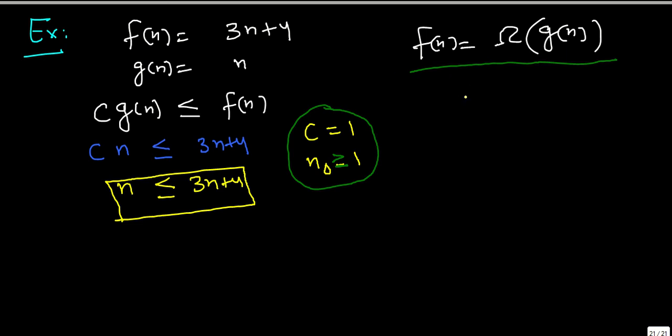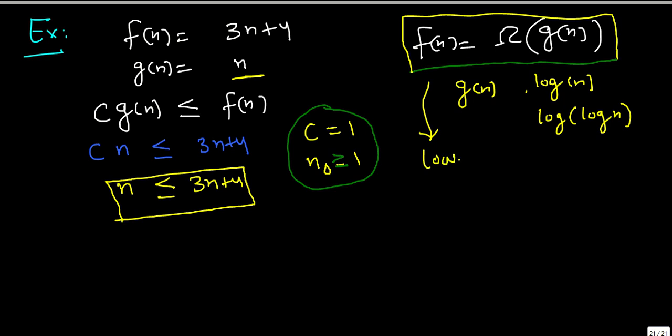Technically speaking, if you have any function G(n) like log of n or log of log n, and if these functions are smaller than this G(n), we can say that this condition is being satisfied. Technically, we have found the lower bound on F(n).